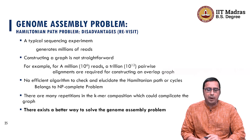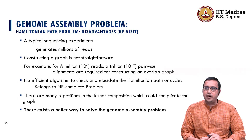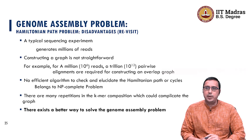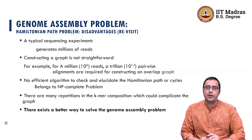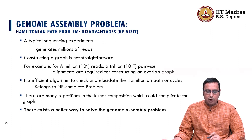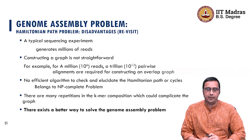We looked at the Hamiltonian path problem and realized that finding the Hamiltonian path in a large graph is not straightforward. Particularly in a Genome Assembly problem, we have to deal with millions of reads, and constructing a graph for such a big dataset is not straightforward when we have to deal with a trillion pairwise comparisons.